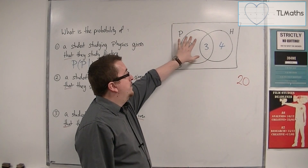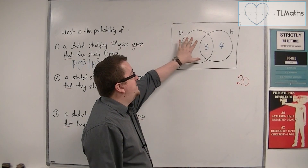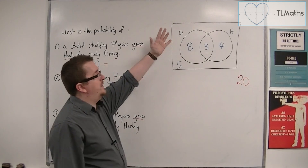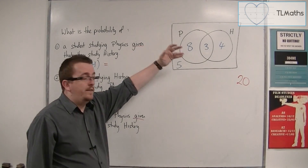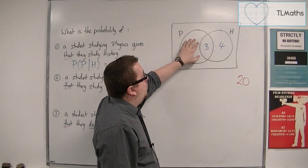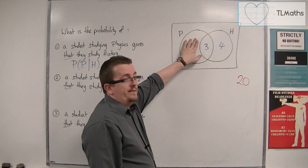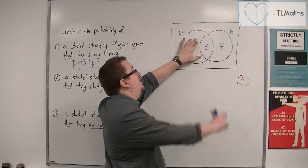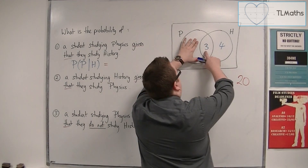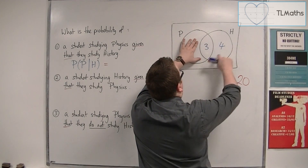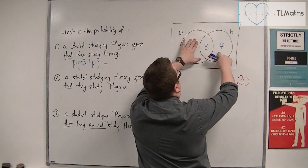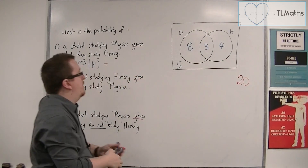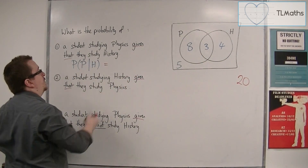Because we know that they study history, we don't need to worry about the 8 and the 5 — the 13 others. So now, what is the probability of them studying physics? Well, there are three out of the seven that study physics, and that is the probability we're looking for.